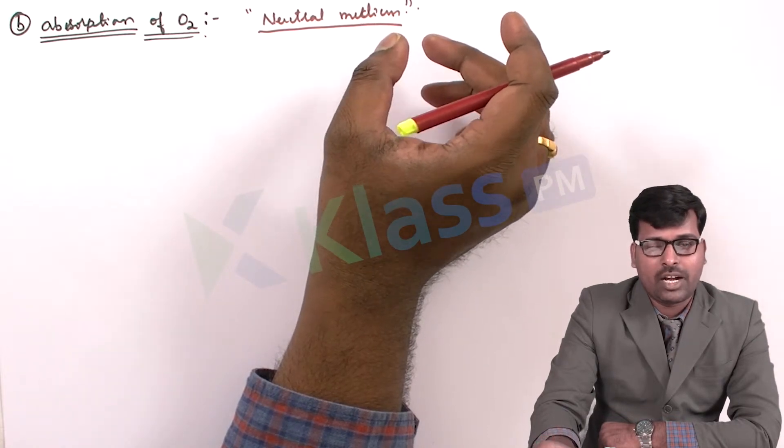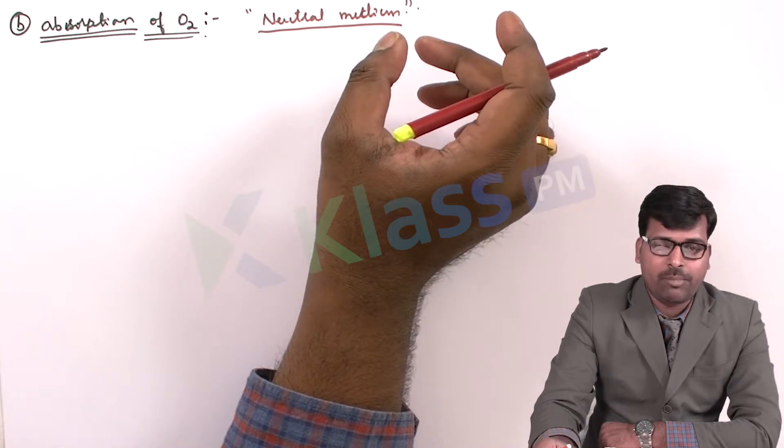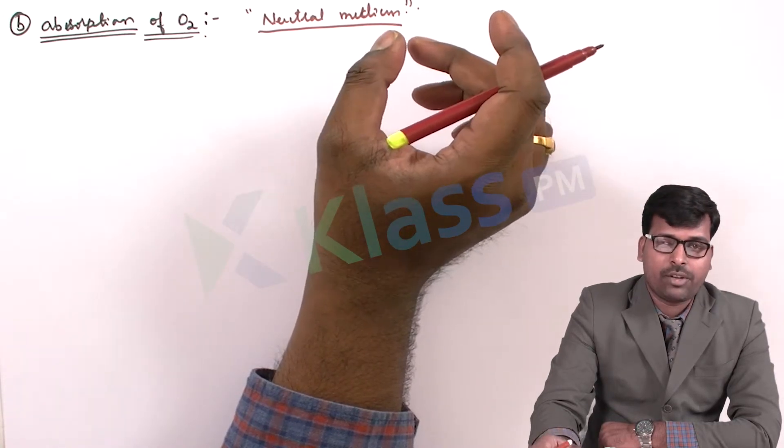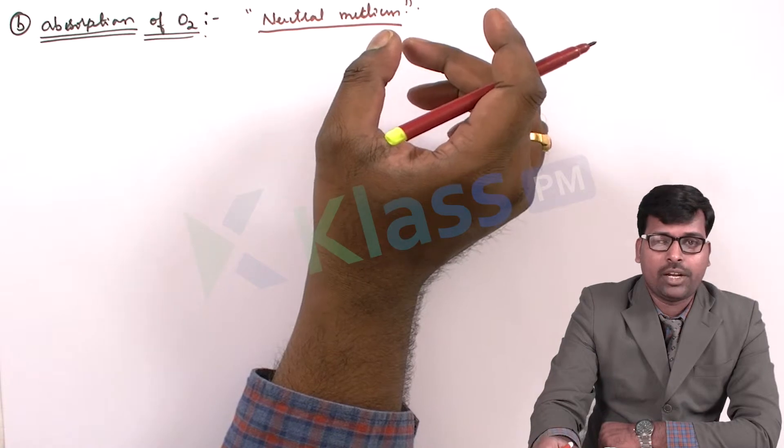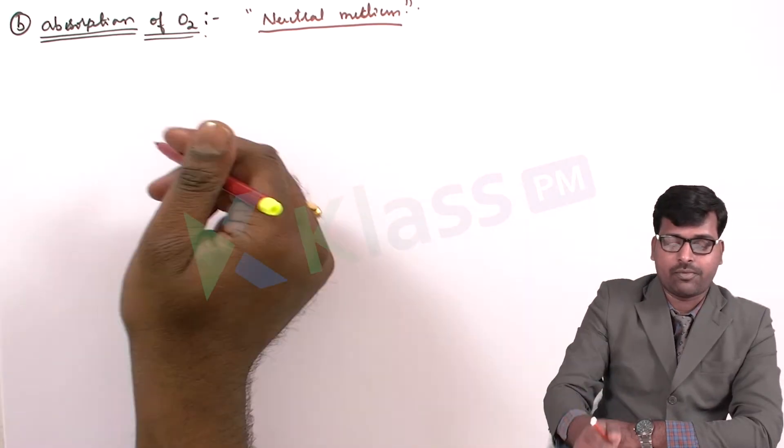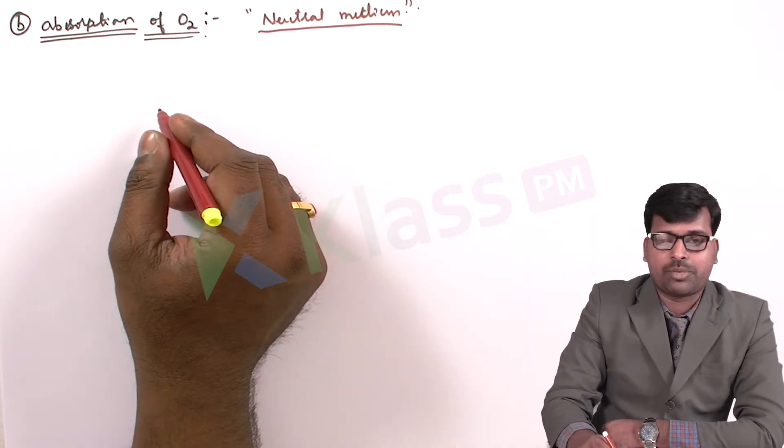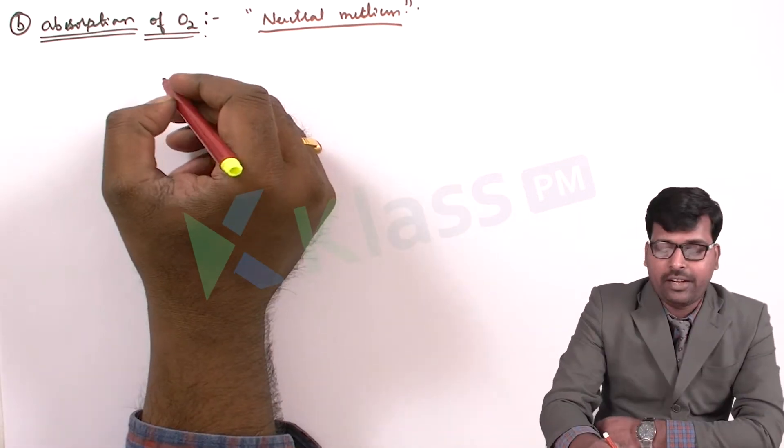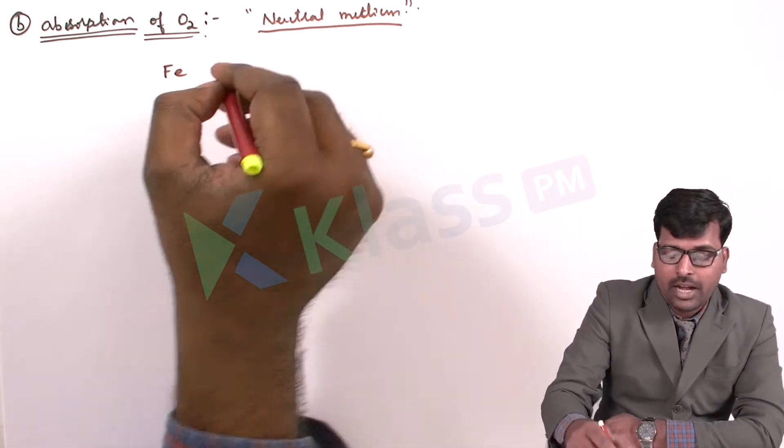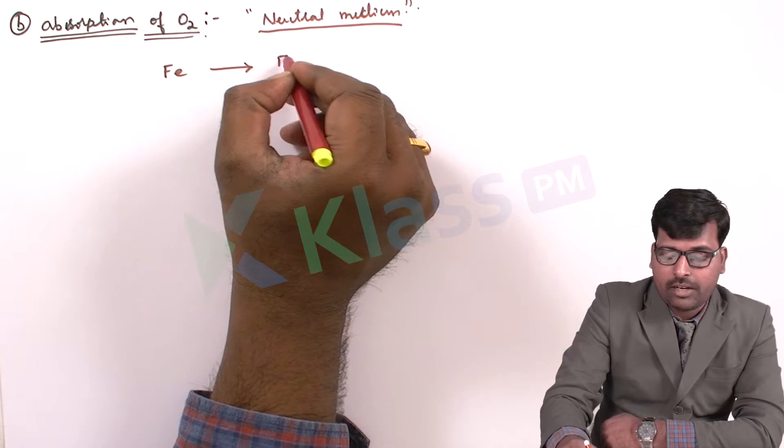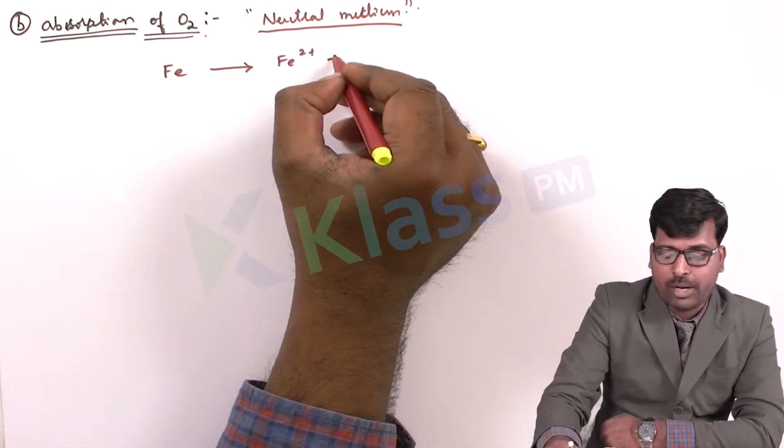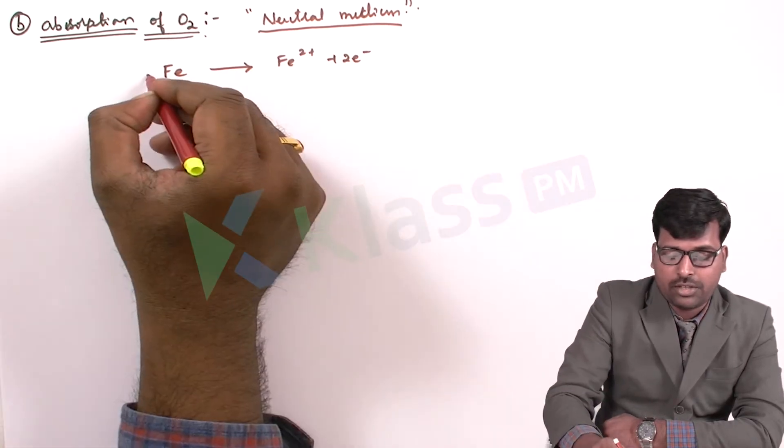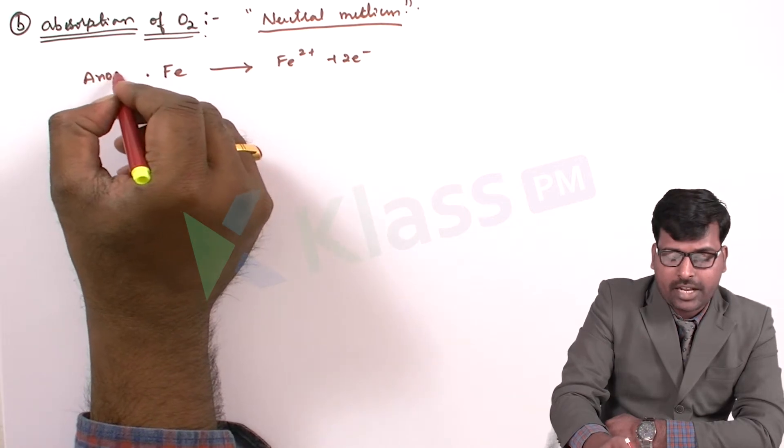So either we have to maintain the oxygen free environment or moisture free environment to avoid the corrosion. So let's see what happens in this case of absorption of oxygen. In this kind of corrosion, the iron will get oxidized to form Fe2+ plus two electrons. And we can consider it as anode.